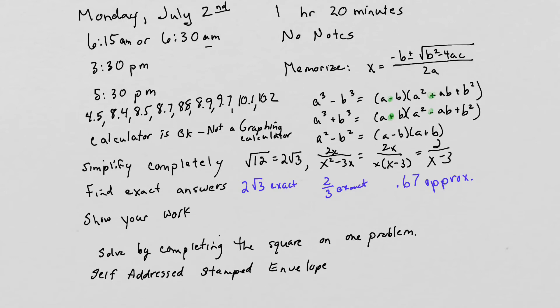There's 16 problems on the test—I think I forgot to write that down—16 or 17 problems. One of those problems you'll need to solve by completing the square, and the instructions will say that. So there's only one problem that you have to use the completing the square method on, but to get full credit, you do need to use completing the square on that problem.